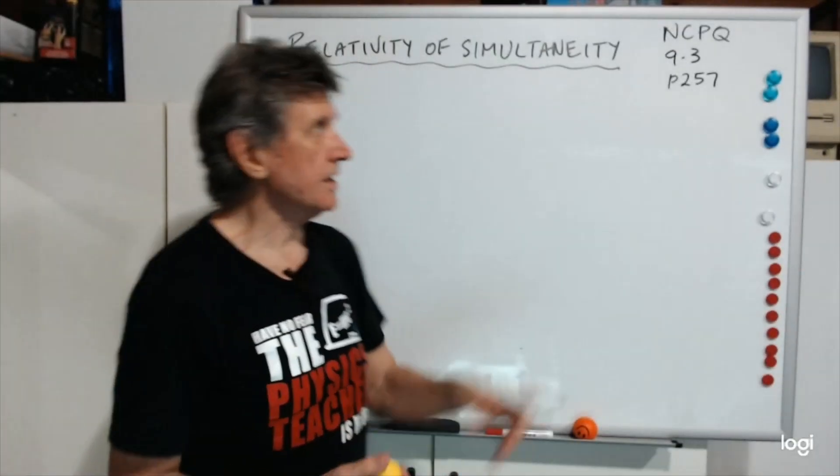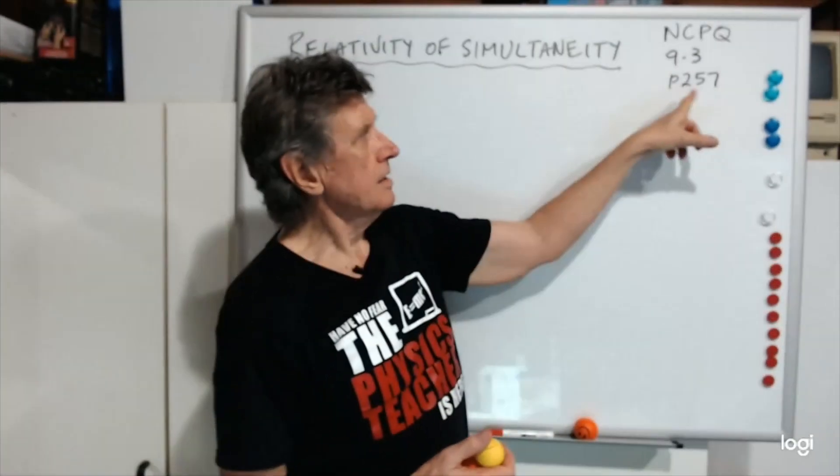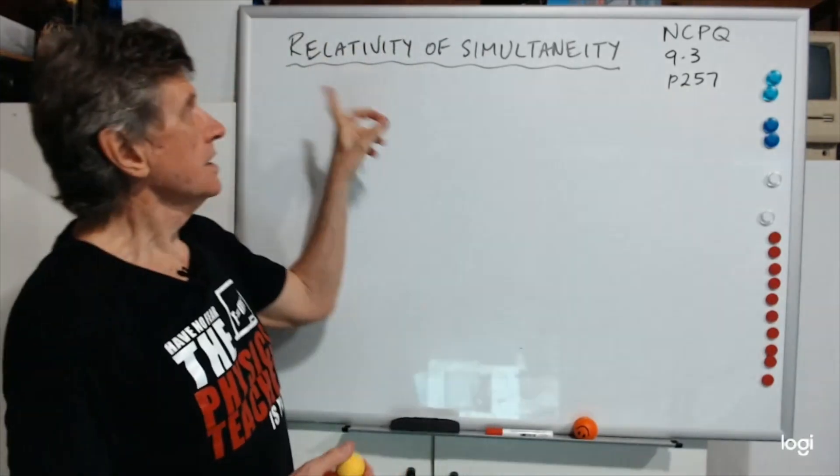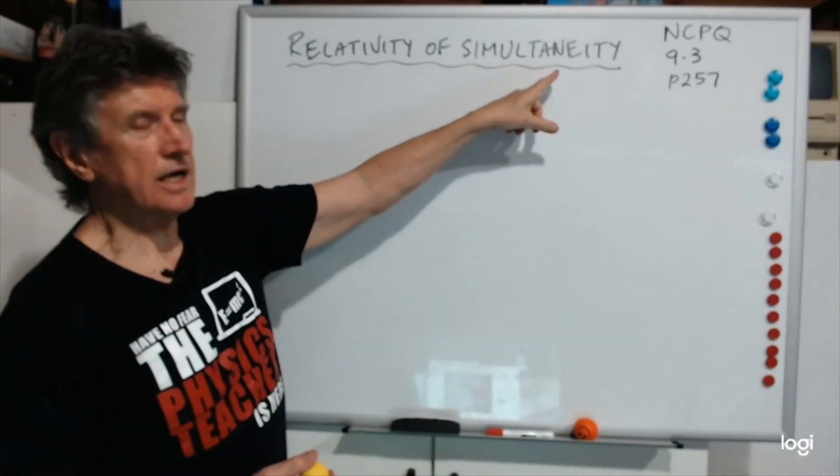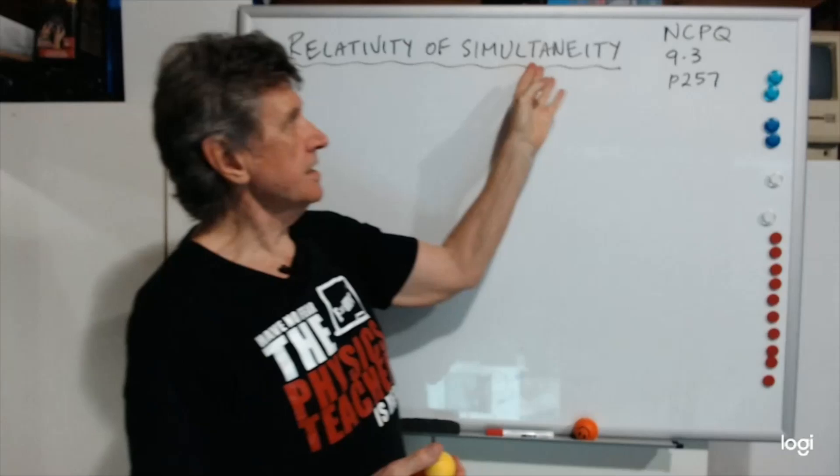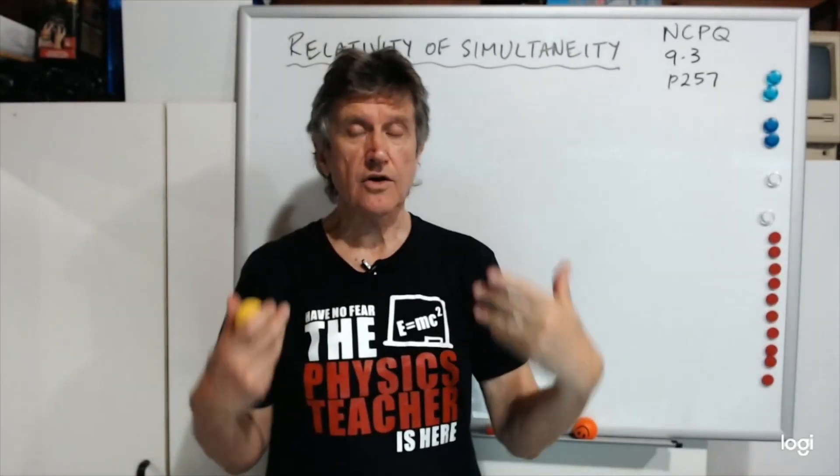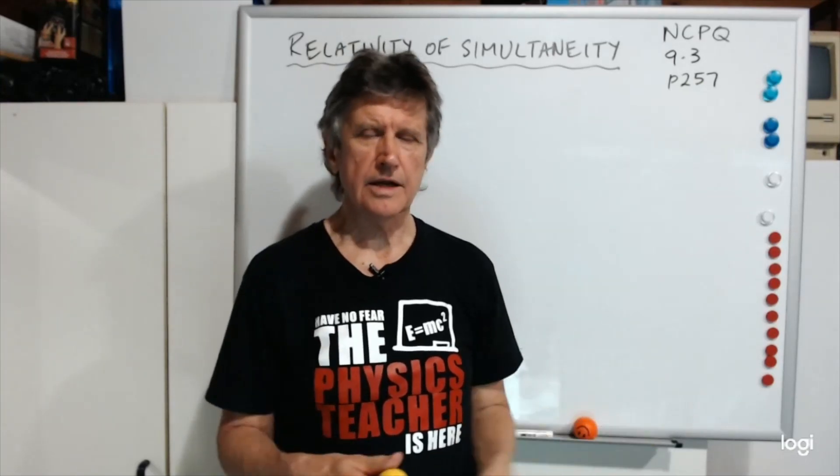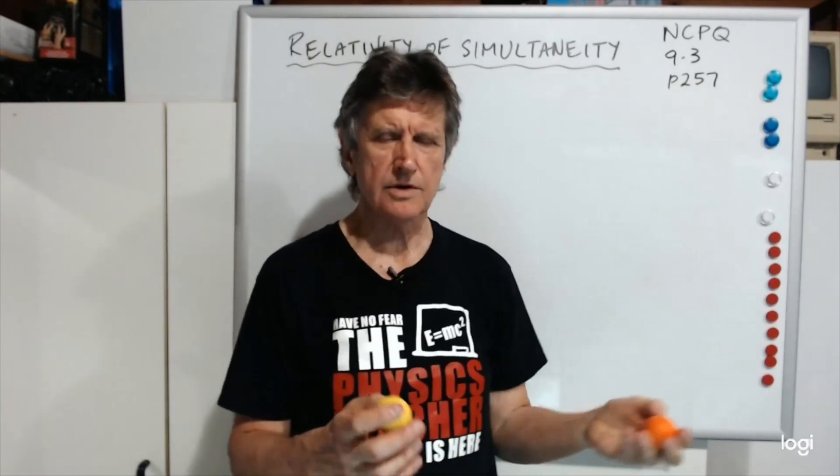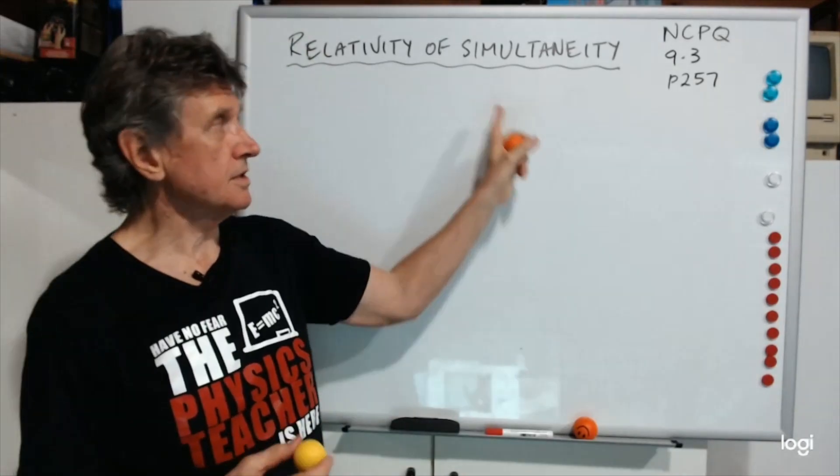Now, in this video, I'm going to have a look at chapter 9.3, page 257 of the text. It's called Relativity of Simultaneity. Simultaneity is the idea that two events can be simultaneous. If they occur at the same time, they're said to be simultaneous. Or if they appear to have occurred at the same time, you can judge whether they're simultaneous or not.